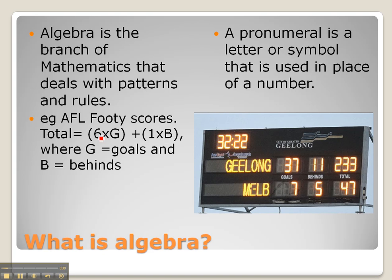We can express that as this equation here. Total score is equal to 6 times g plus 1 times b, where g equals goals and b equals behinds.